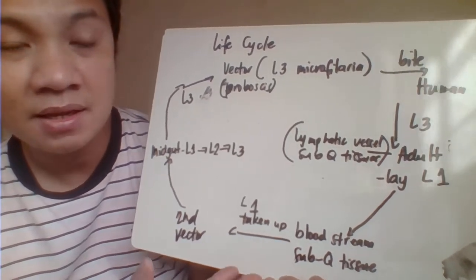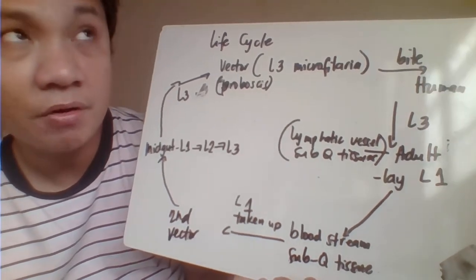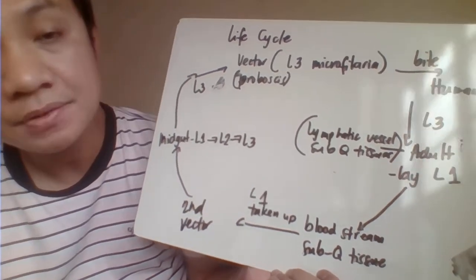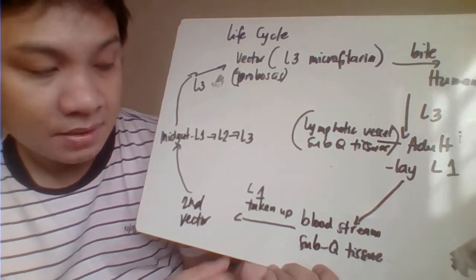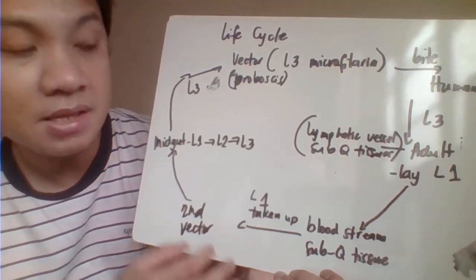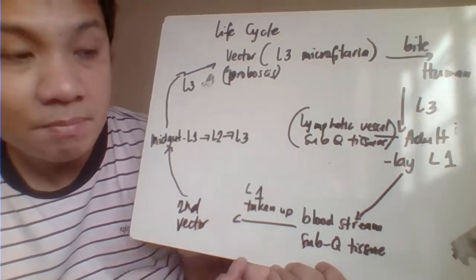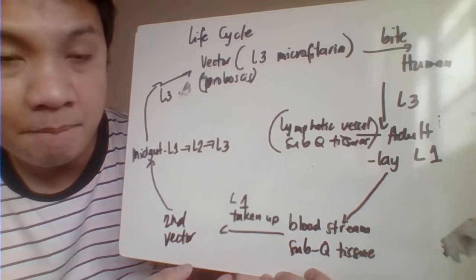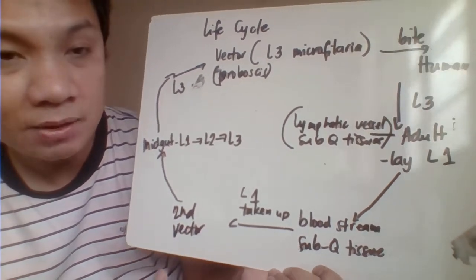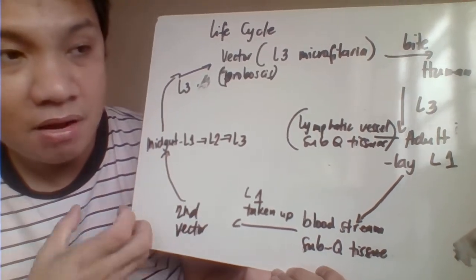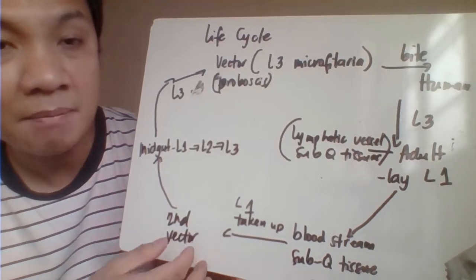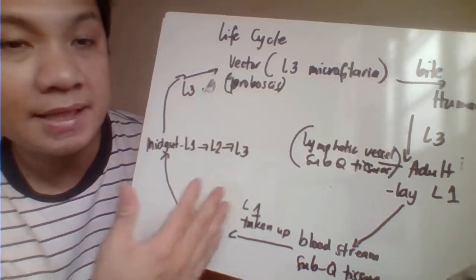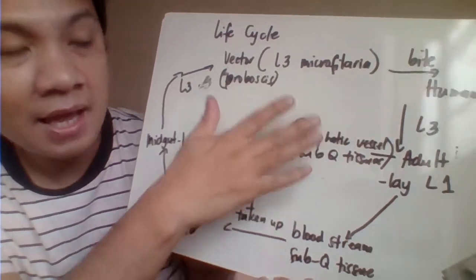The L1 then migrates to the bloodstream or subcutaneous tissues, depending on the species. When an uninfected vector takes a blood meal from the infected patient, it ingests the L1. Inside the vector's body, L1 develops into L2 and finally into L3. Once it becomes L3, this third-stage microfilaria migrates up to the vector's mouthpart or proboscis, and the cycle continues.